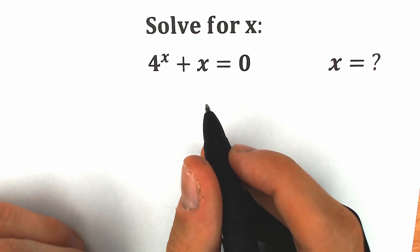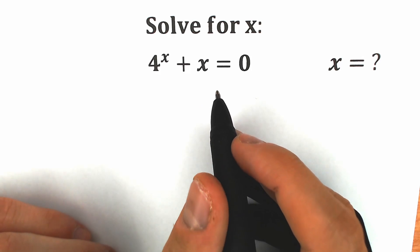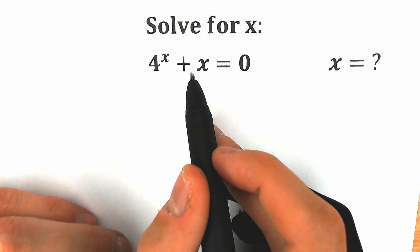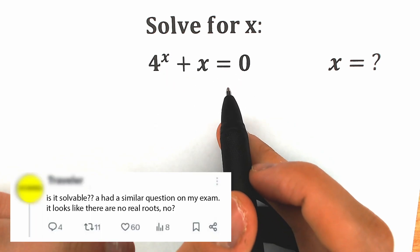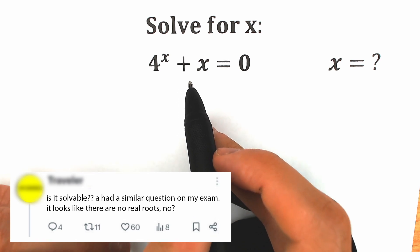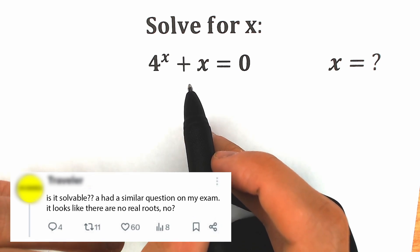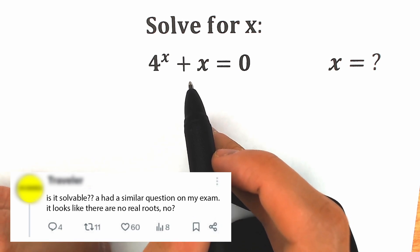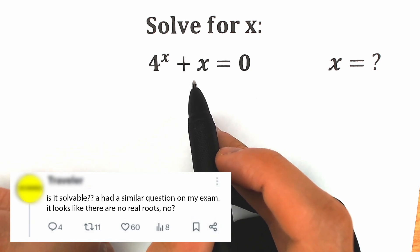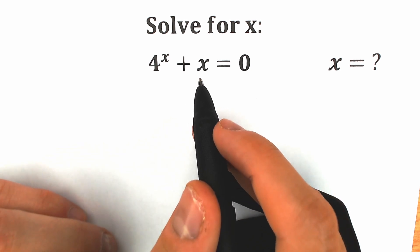Hello everyone, welcome back to my channel Higher Mathematics. Today we have a really interesting exponential equation from a math exam: 4 to the x plus x equals 0. A lot of students comment on my post about this question saying that we don't have real number roots. But I want to say that we do have one real number root — a very tricky and interesting moment. In this video I'm going to show you how to solve this correctly, step by step. You can also write your solution down in the comment section.